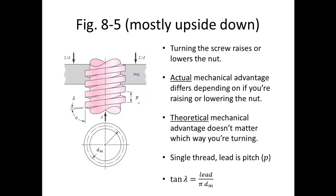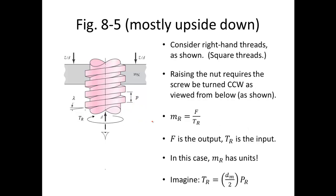In screws we have what's called a lead and also a pitch. If it's a single-threaded screw, as shown here, the lead is equal to the pitch. The tangent of the lead angle is the lead, or pitch, divided by the circumference of the mean diameter of the screw. Here we're showing square threads — specifically right-handed threads, since the threads go to the right.